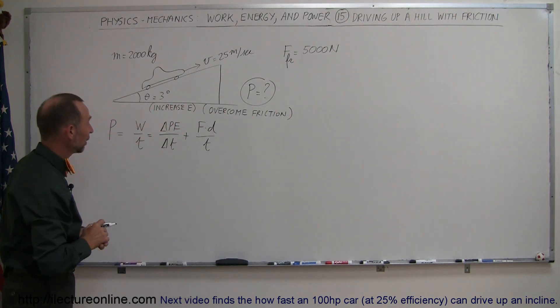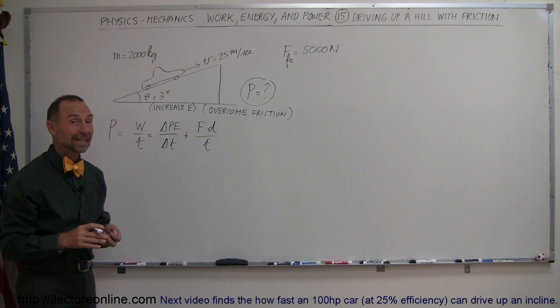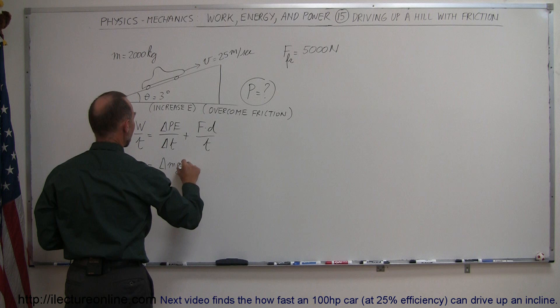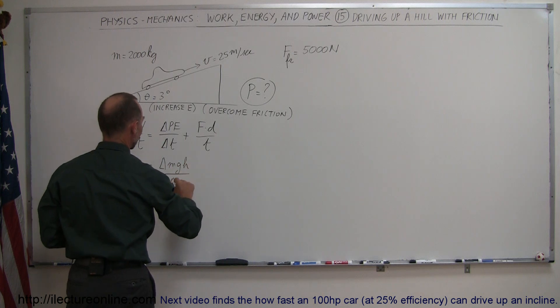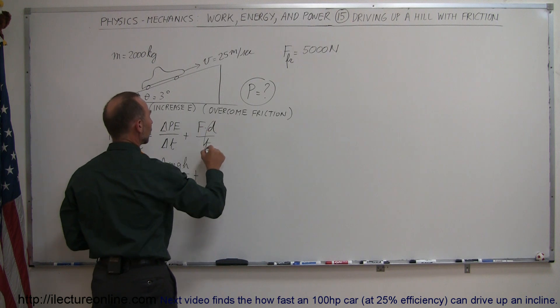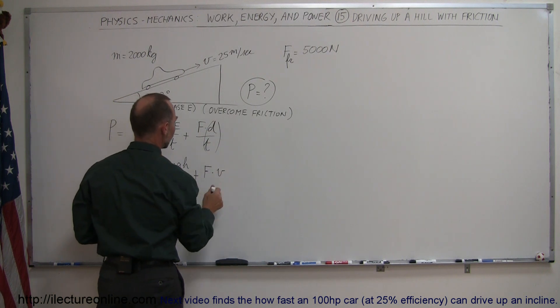All right, so now let's plug in some more information here. The increase in potential energy would be the increase in MGH. So this would be equal to the change in the MGH, divided by the amount of time that has elapsed, plus the force times the distance. Now notice that distance over time is velocity, so it would be the force times the velocity.